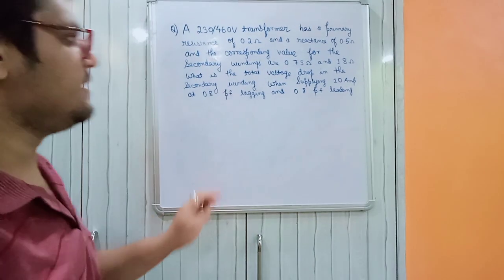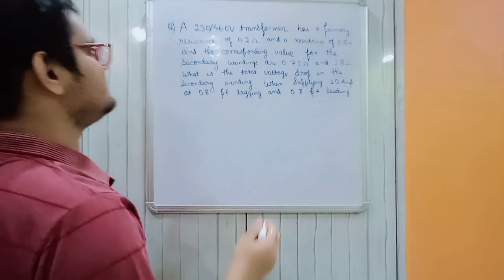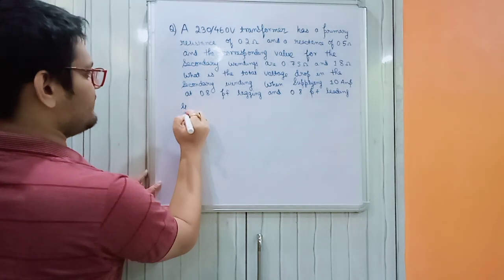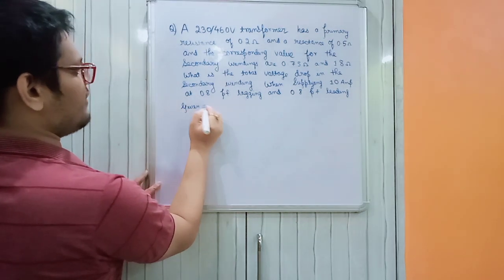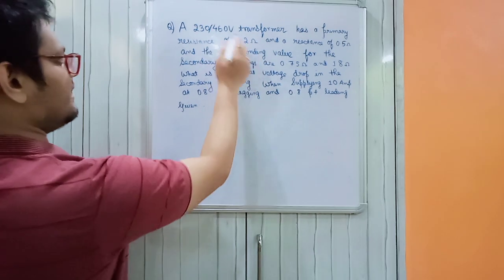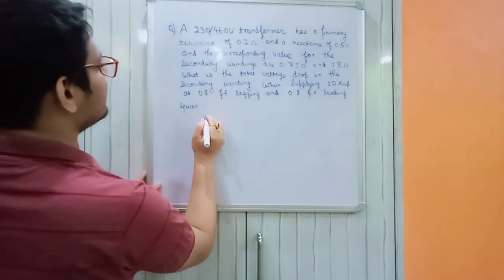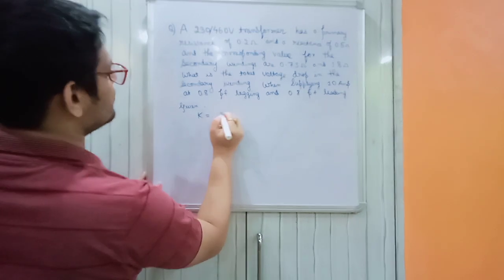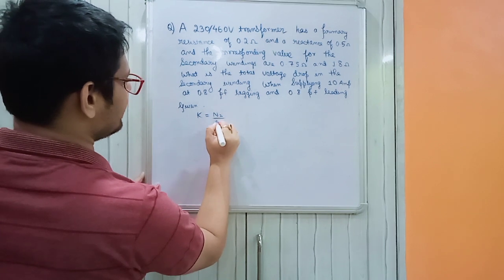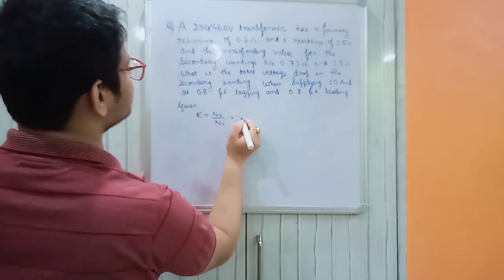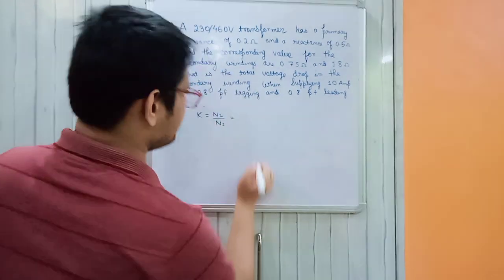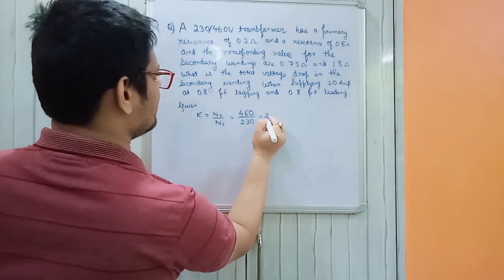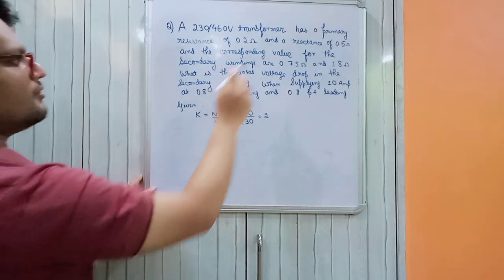First, we take all the given data. The turns ratio K = N2/N1 = 460/230 = 2. So K is equal to 2.